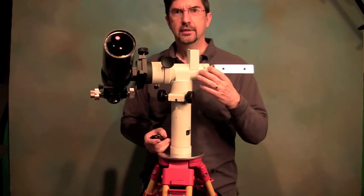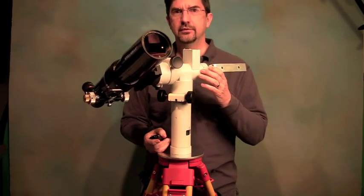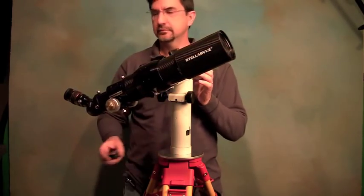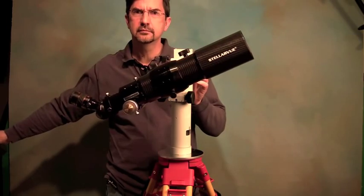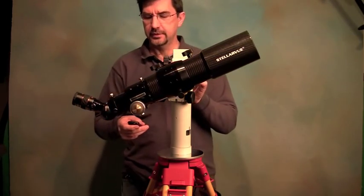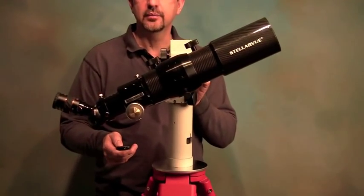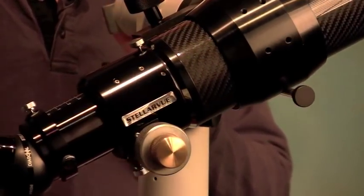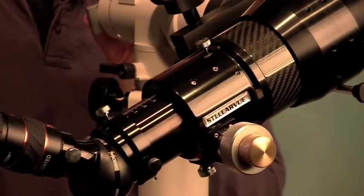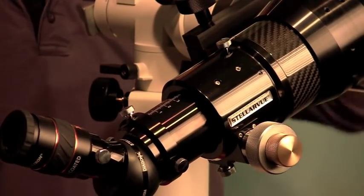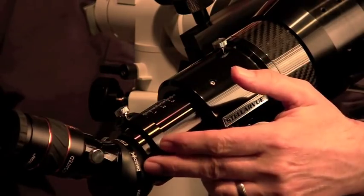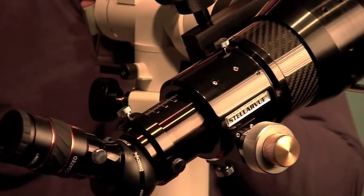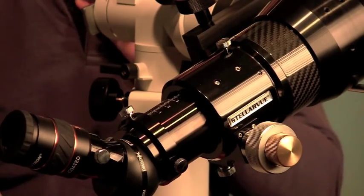Let me just show you this. I'll just turn it around so you can see the scope a little better. There it is. Bring it in a little bit. I have the erecting prism on right now and I'll show you it with the Stellarview two-inch diagonal in a moment.